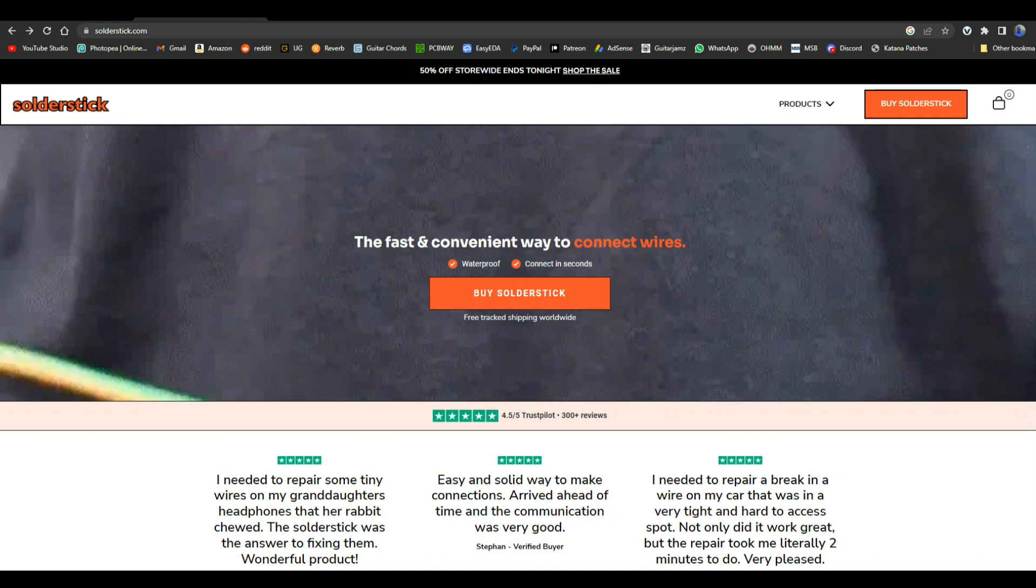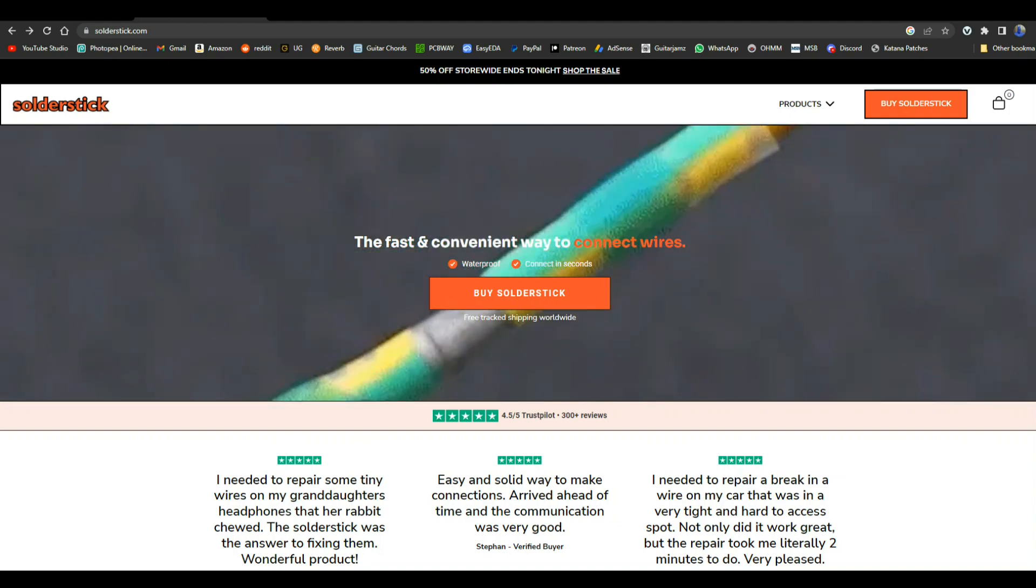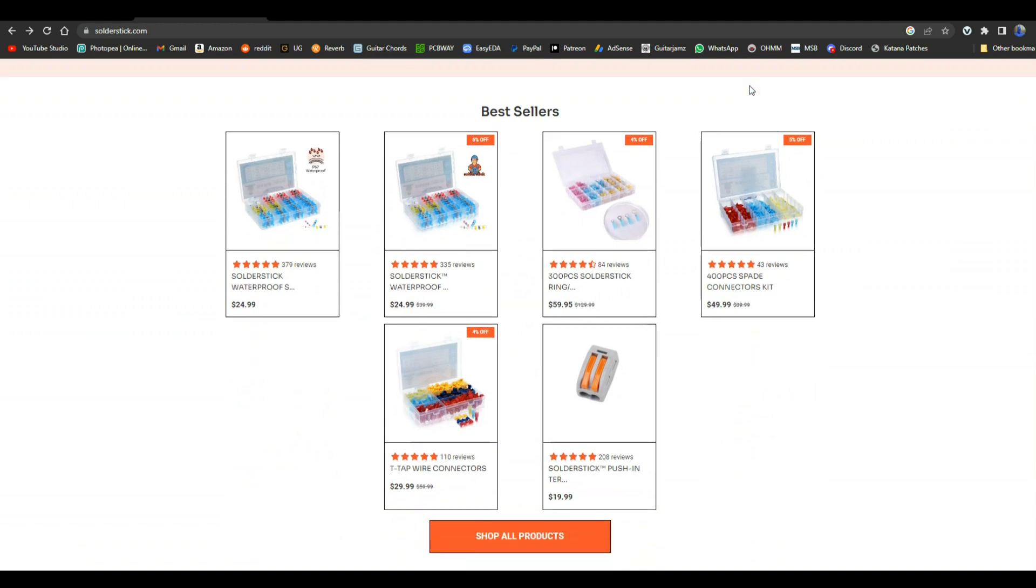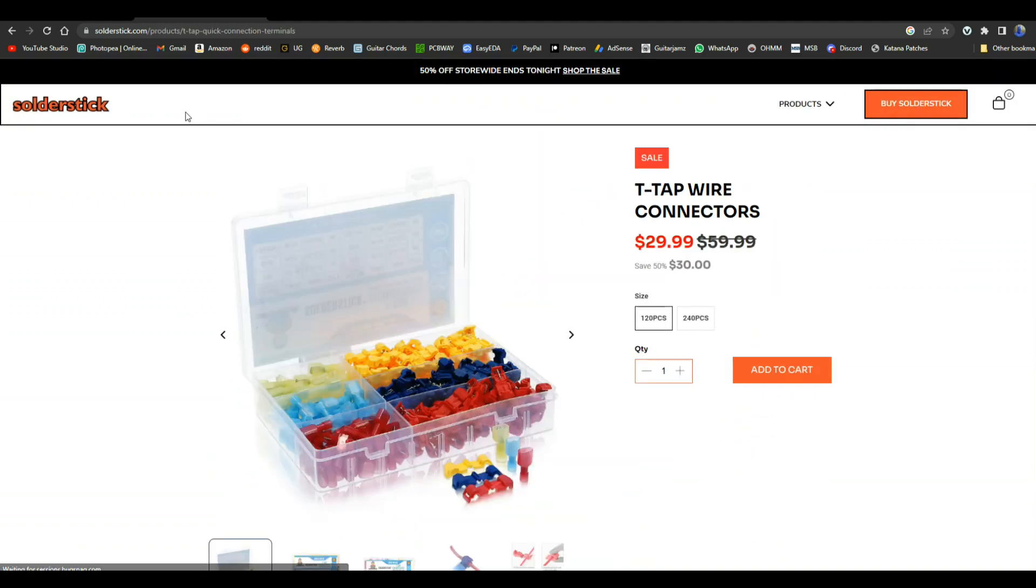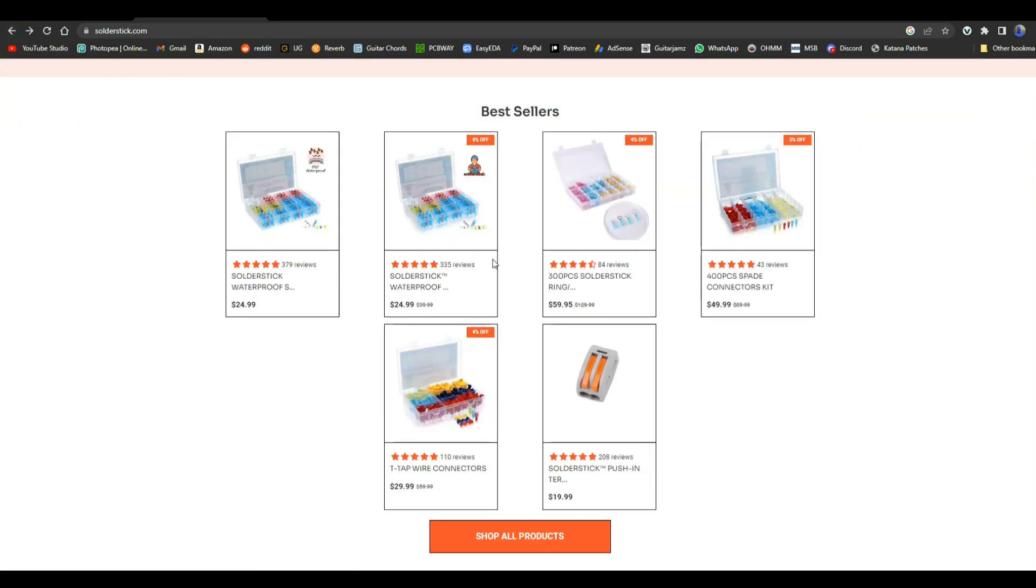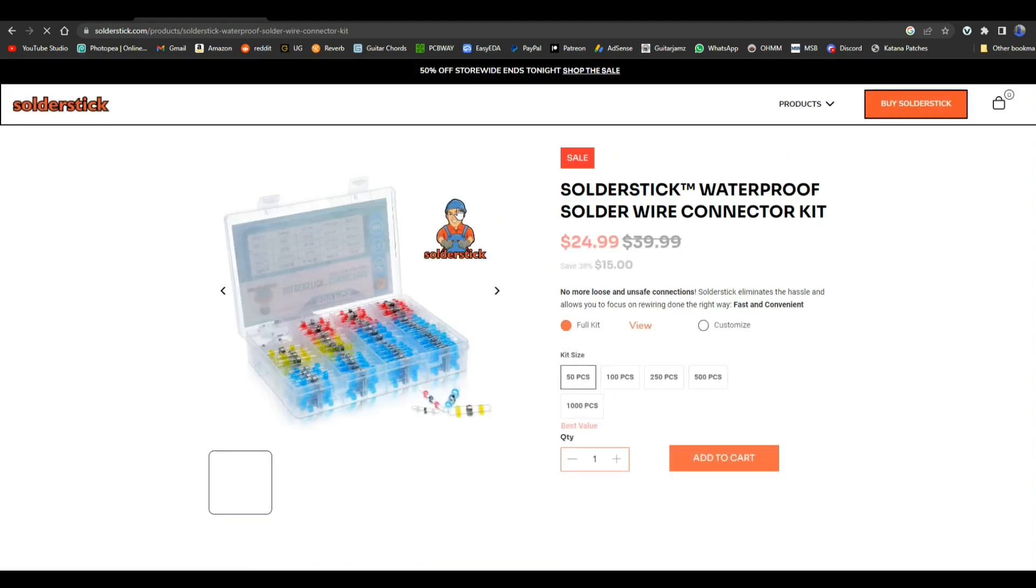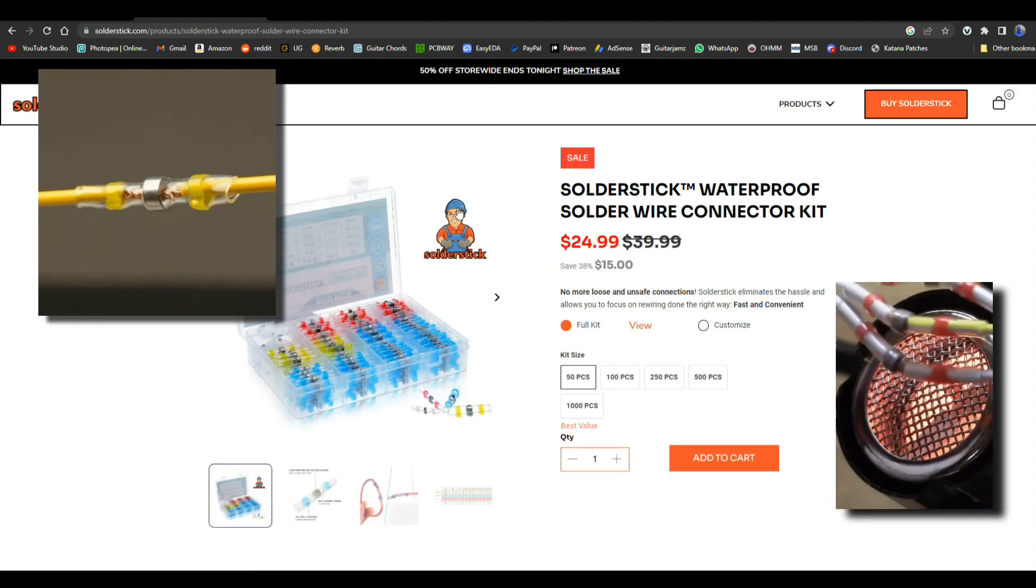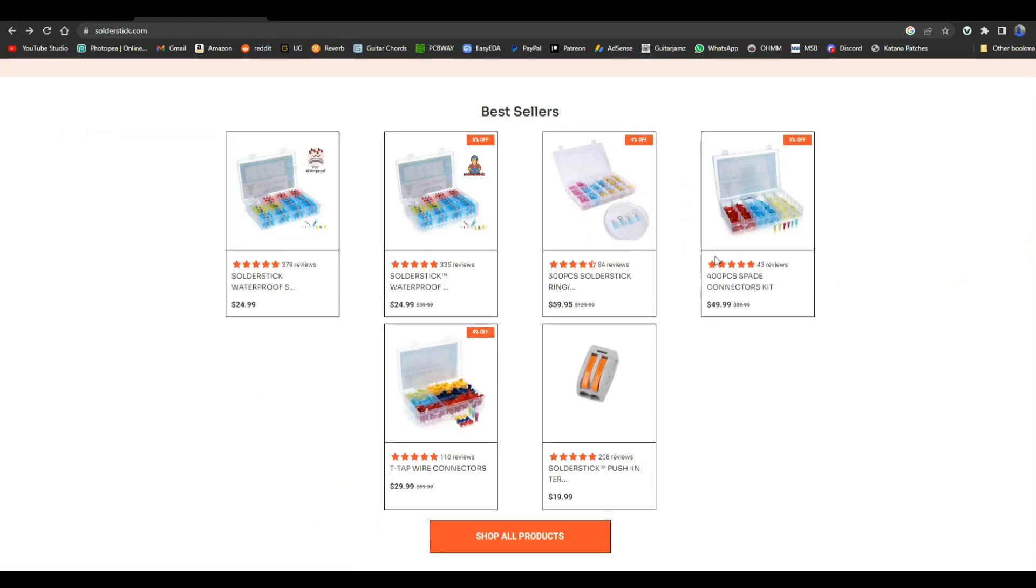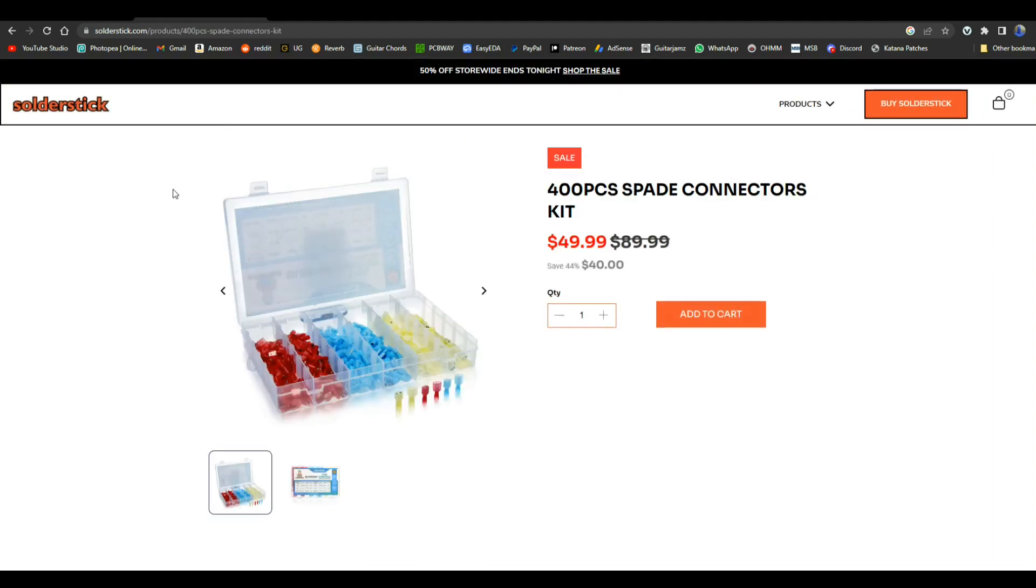Today's video is brought to you by SolderStick. SolderStick makes quick waterproof wire connections that last a long time and protect whatever it is you're working on. They sell different types of connectors, everything from T-tap connectors which allow you to put a splice into the middle of a wire without having to cut the wire or remove any insulation. Waterproof melt butt connector kits.